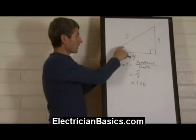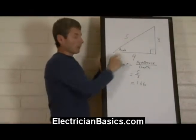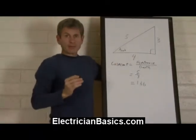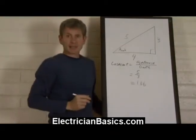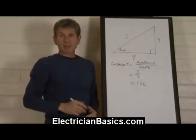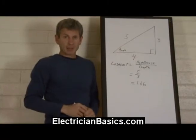So in order to find out what this degree angle is, we go and find an angle whose cosecant is 1.66. So go to that trigonometric table and do that now. And what do you come up with?